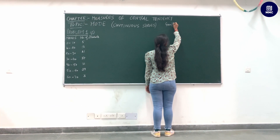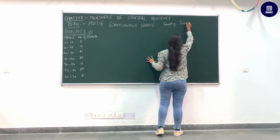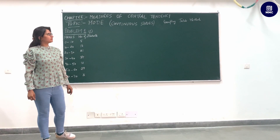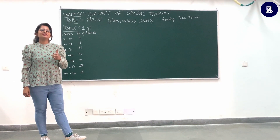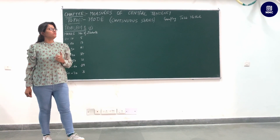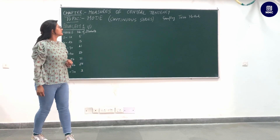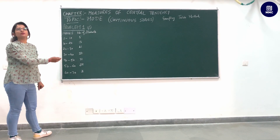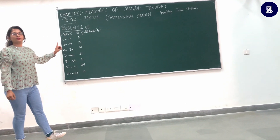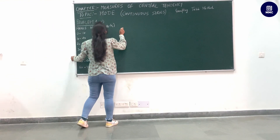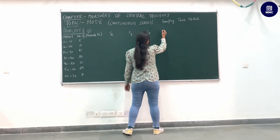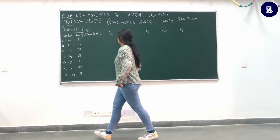Today we will start with the grouping table method. In this method we have to generate two tables. The first table is the grouping table, and then we will move to the second table which is known as the analysis table. For the grouping table we need to make six columns: column number one, two, three, four, five, and six.